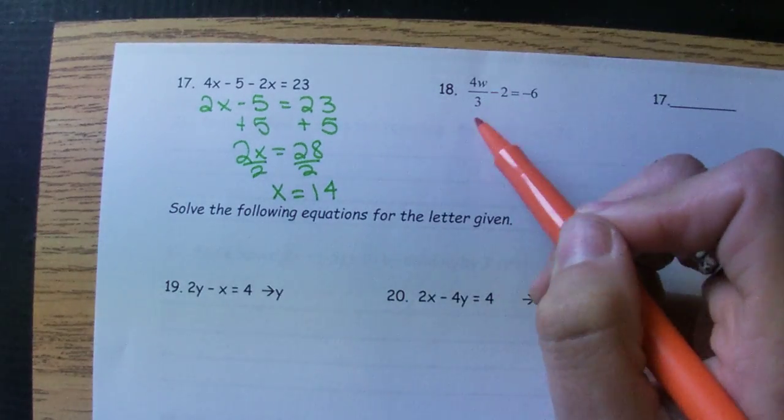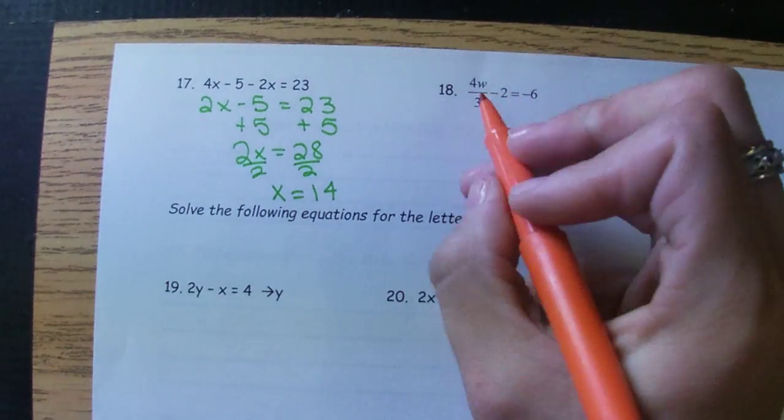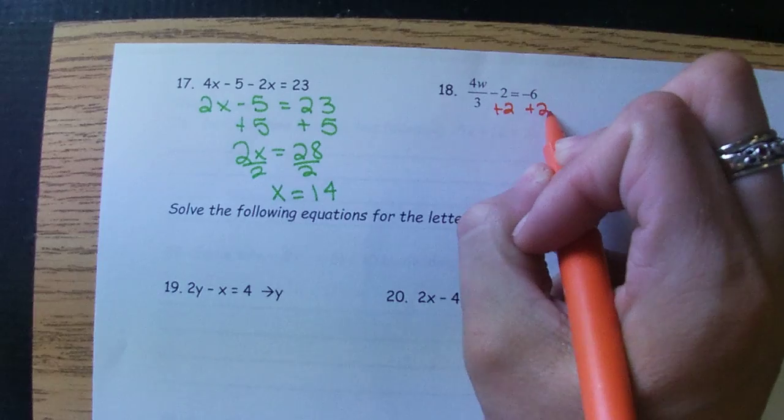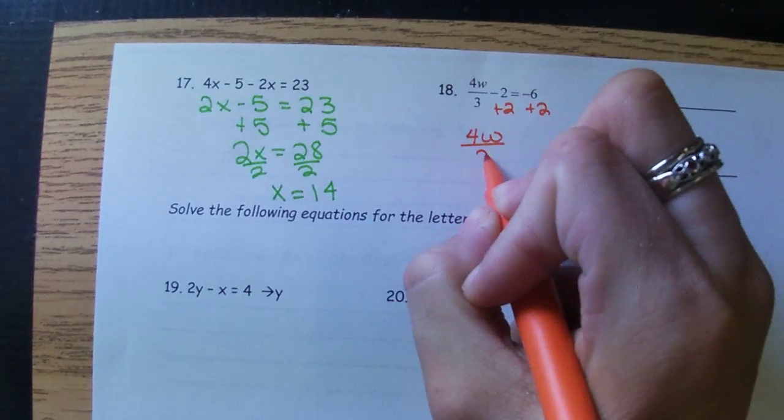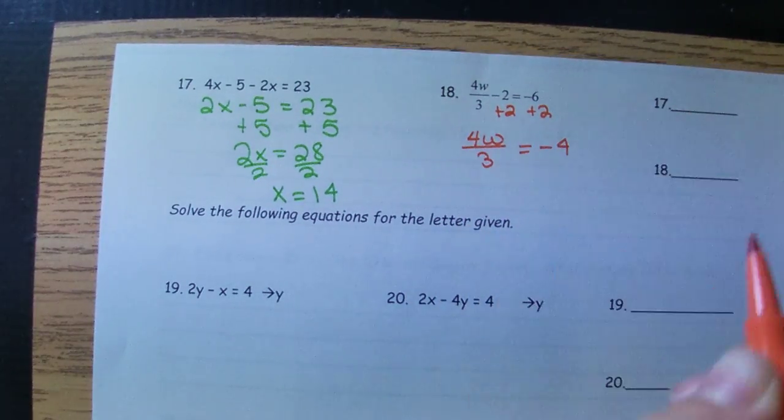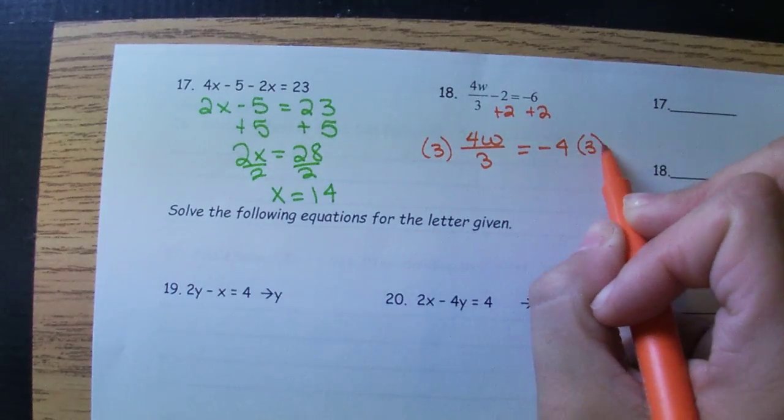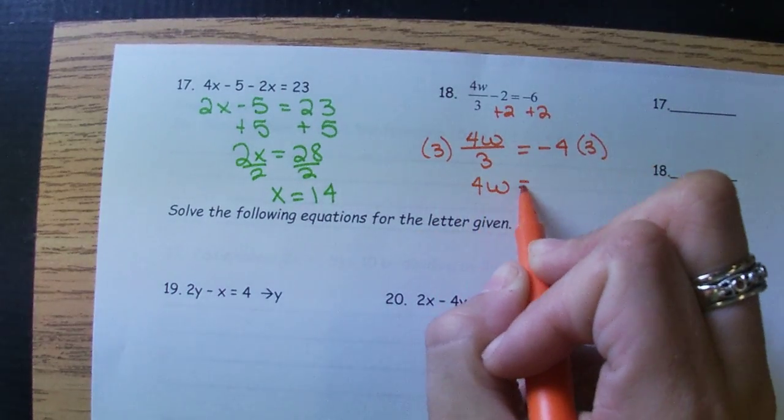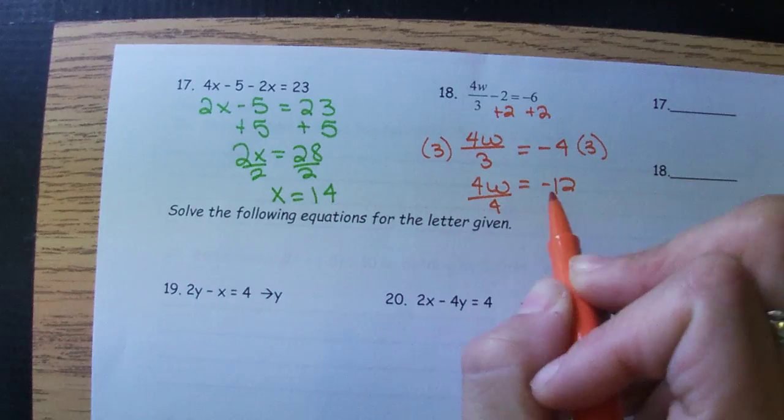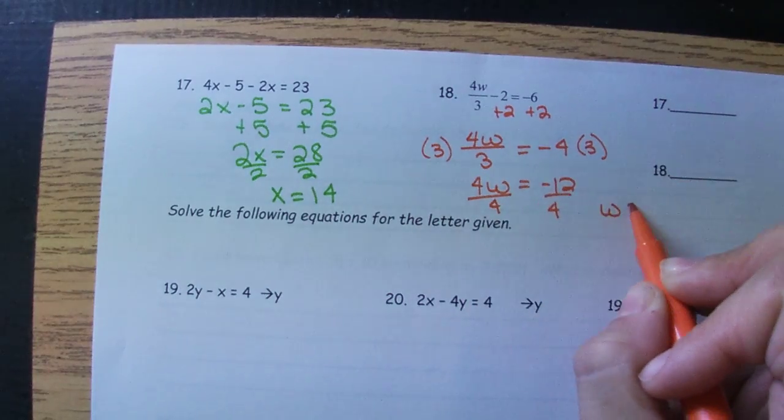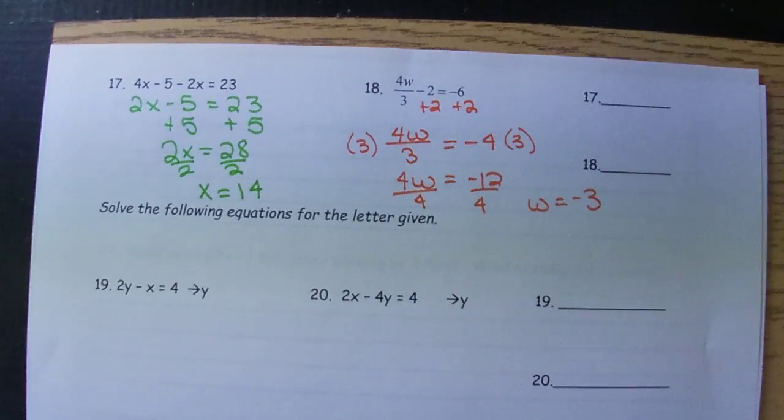Number 18, we do sort of have this larger fraction happening, but this 2 isn't part of it, so we need to make sure we're moving that first. Then we can deal with the denominator. I want to undo multiplication with division. W equals negative 3.